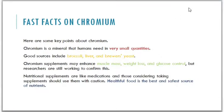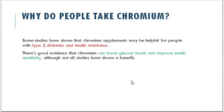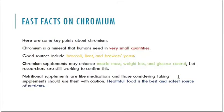Why do people take chromium? Some studies have shown that chromium supplements may help people with type 2 diabetes and insulin resistance — there is good evidence that chromium can lower glucose levels and improve insulin sensitivity, although not all studies have shown a benefit. Key facts: chromium is a mineral needed in very small quantities; good sources include broccoli, liver, beverages, and yeast; chromium supplements may enhance muscle mass, weight loss, and glucose control, though researchers are still working to confirm this. Nutritional supplements should be used with caution, and healthful food is the best and safest source of nutrients.